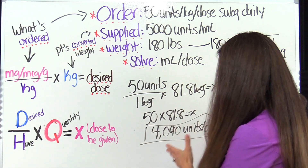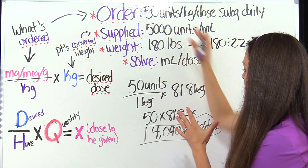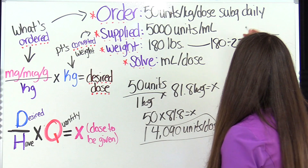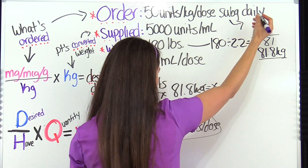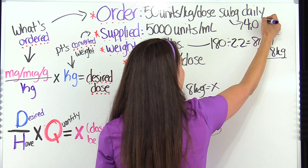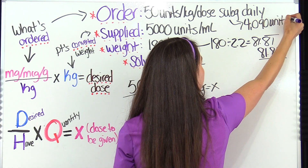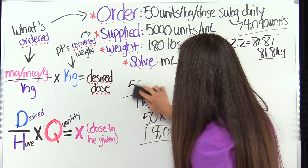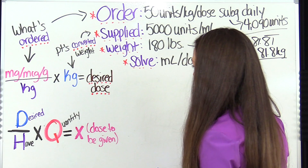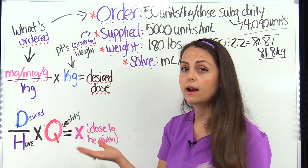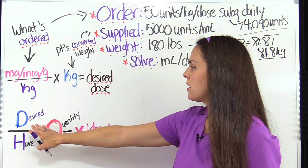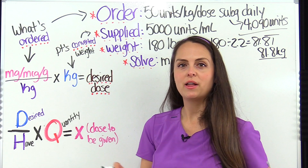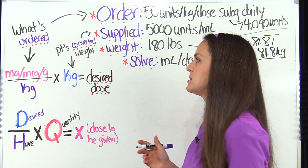So based on how much this patient weighs, they need 4,090 units. I'll write that up here so we can remember it while I erase this part of the board to make more room. Now we're ready to plug into the desired over have formula to figure out how many milliliters per dose we can give. If you don't know how to use this formula, I have a whole video explaining it step by step — go watch that if you haven't.